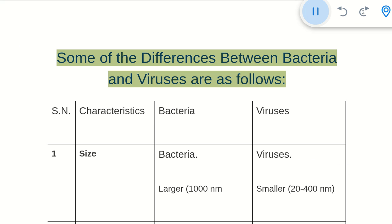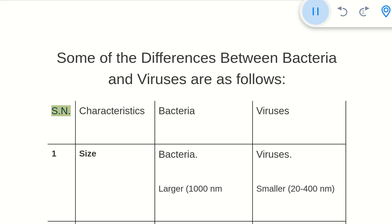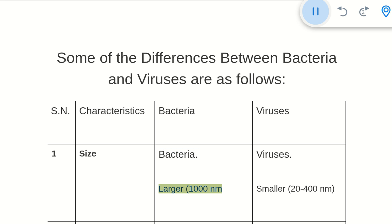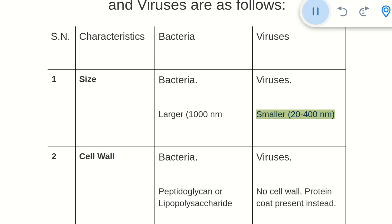Some of the differences between bacteria and viruses are as follows. Characteristics: Bacteria vs Viruses. 1. Size: Bacteria are larger, around 1,000 nanometers. Viruses are smaller, ranging from 20 to 400 nanometers.